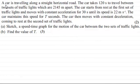What we've got here is a car travelling along a straight horizontal road. The car takes 120 seconds to travel between two sets of traffic lights which are 2145 meters apart.